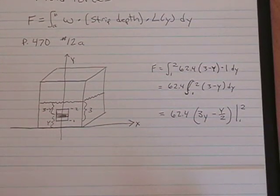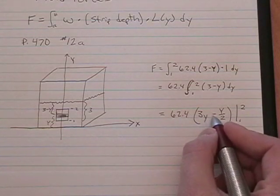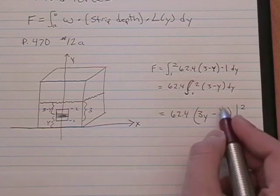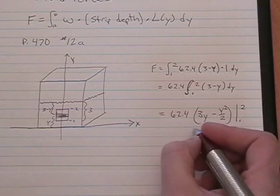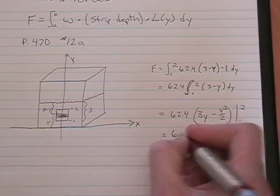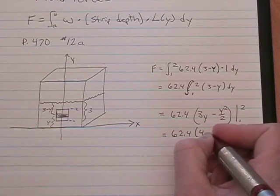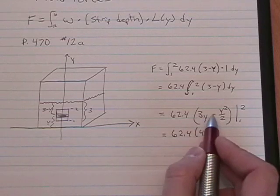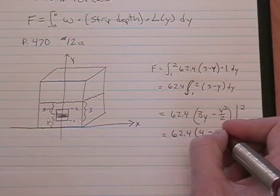Alright. We already did the integration. We plug in a two, we get six minus four over two, which is two. So when you plug in two, you get four. When you plug in a one, you get three times one, which is three minus one half, which is 2.5.